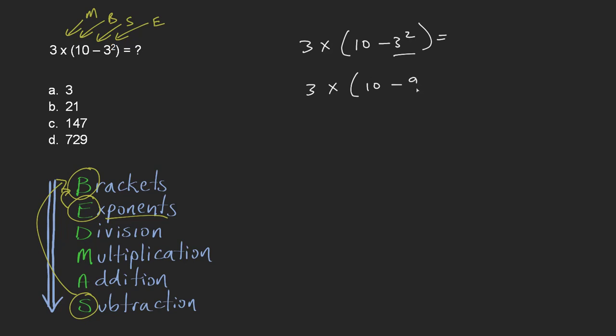So that takes care of the exponent. Next thing we're going to do is the bracket subtraction. So this will be 3 × (10 - 9). That's 1.